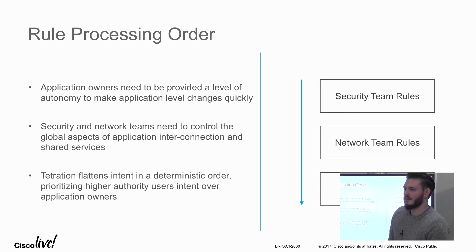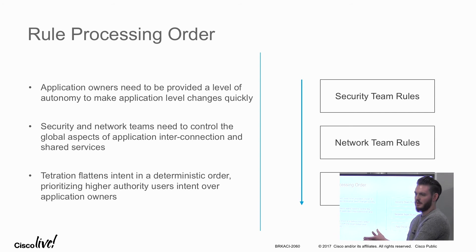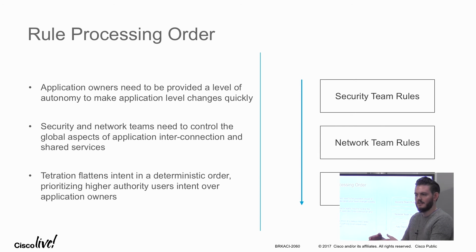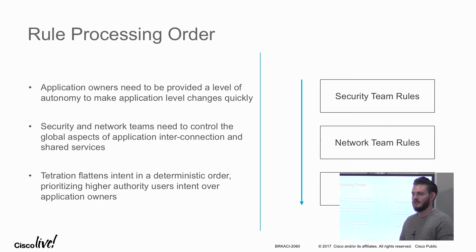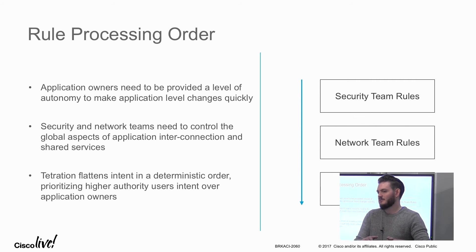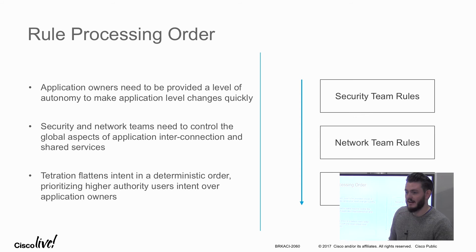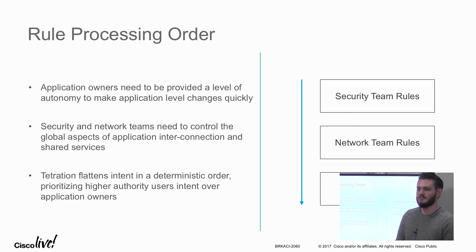We also have the concept of shared services. Most data centers have AD, DNS, and NTP shared by every single application, or someone might open up a database that different applications connect into. Tetration allows you to offer a public service as an application owner. When other applications want to connect into that service, it generates a notification between the two application owners — for example, asking whether a WordPress application should be allowed to connect into your AD server. You can handle these manually, or the application dependency mapping algorithms will detect the connection attempt and generate that notification automatically.